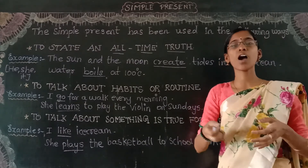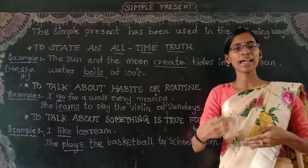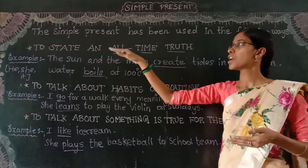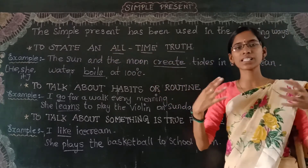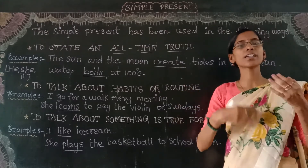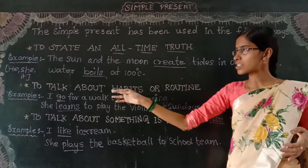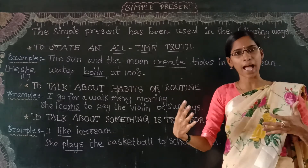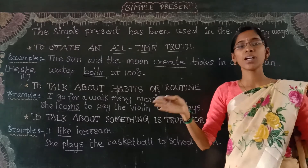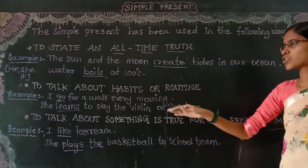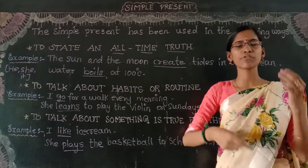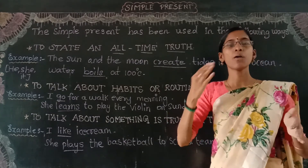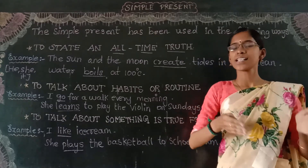Students, in this class we have learned three different rules for using simple present tense. Rule one: to state an all-time truth — if you are speaking about a universal truth, write it in present form. Rule two: to talk about habits or routine — if you are talking about someone's daily routine or daily habits, use simple present form. Rule three: to talk about something that is true for the present time — if an incident is currently true while you are talking, use simple present tense, even if it may change later.